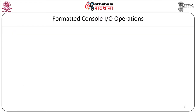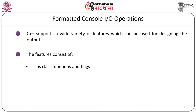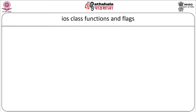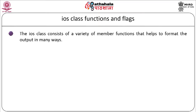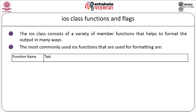Let us see the formatted console I/O operations. C++ supports a wide variety of features for designing output. These features consist of IOS class functions and flags, manipulators, and user-defined manipulators. The IOS class consists of a variety of member functions that help to format the output in many ways. The most commonly used IOS functions for formatting are shown in the table.